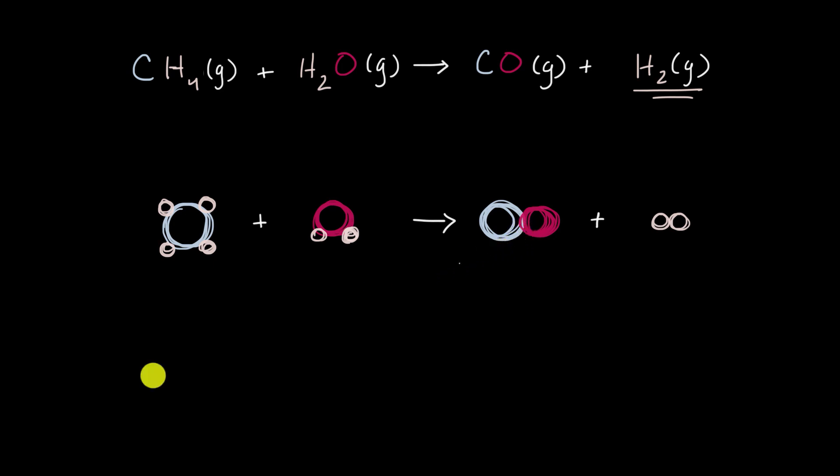Now, what about for the oxygens? Well, we have one oxygen between the methane and the water that we're inputting into the reaction, and we have it drawn right over here. And then we have one oxygen that we are outputting on the output side of our reaction right over here.